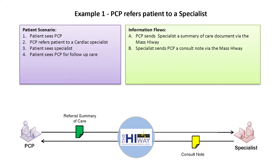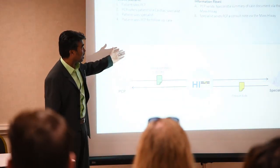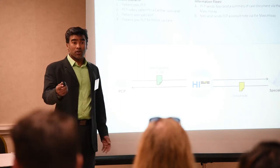Here is a quick pictorial view of how a specialist referral might work. Let's say Murali walks into his PCP with a problem and needs to get referred to a specialist. If the PCP and the specialist are already on Mass Highway, the PCP can take the patient's CCD — the summary of care document — and send it over the highway to the specialist. It's very simple and straightforward.